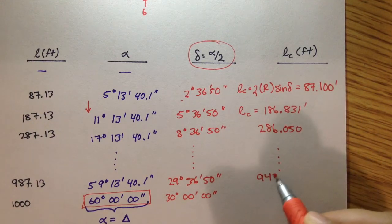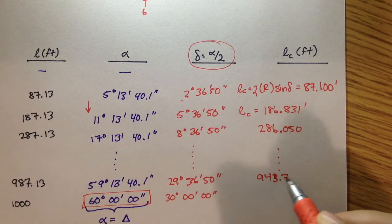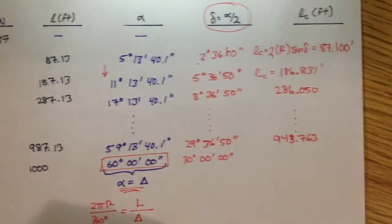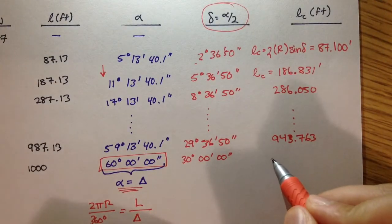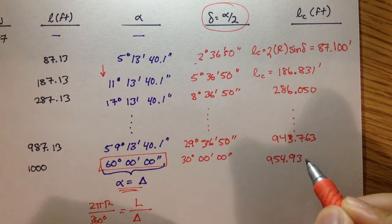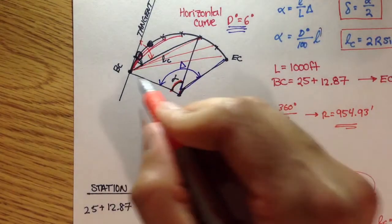We get 943.763, that's for station 35 plus 00. And then finally, we get 954.93, and this is your long chord from BC to EC.